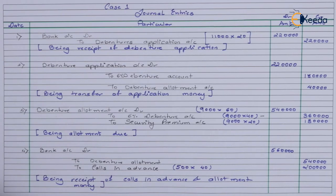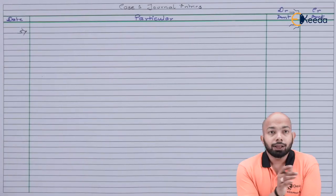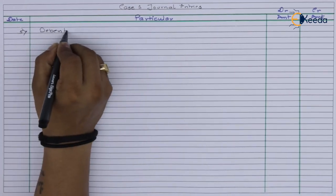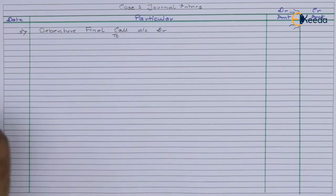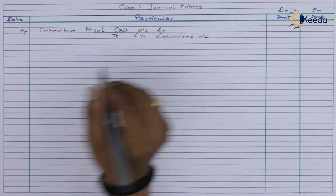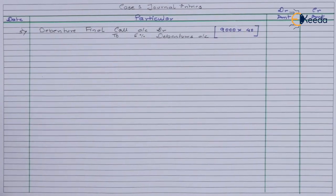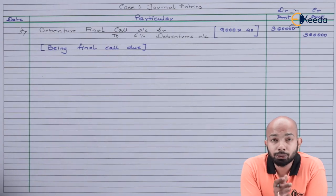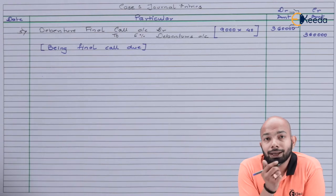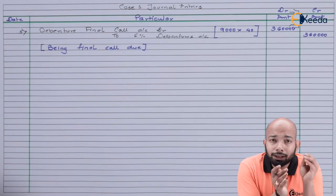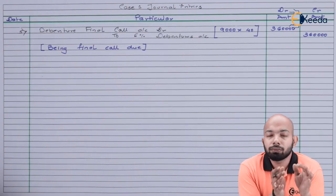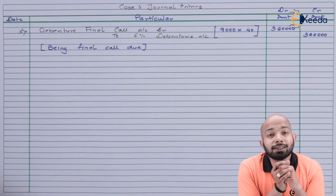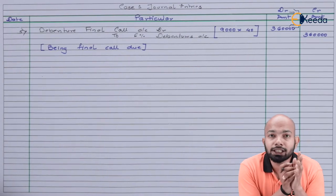The next entry is final call due for 9,000 debentures. After passing that, the receipt of final call entry follows. There are calls in advance as well as calls in arrears to account for. The receipt entry — Bank Account debit, Calls in Arrears Account debit, Calls in Advance Account debit, to Debenture Final Call — is apparently the last entry for case 1.